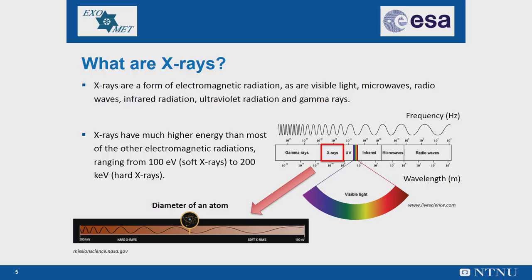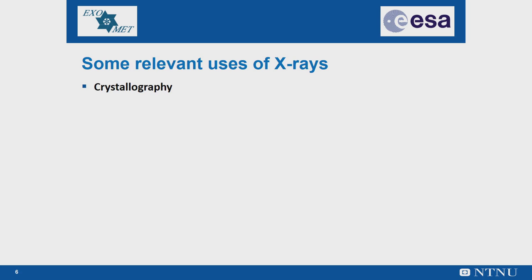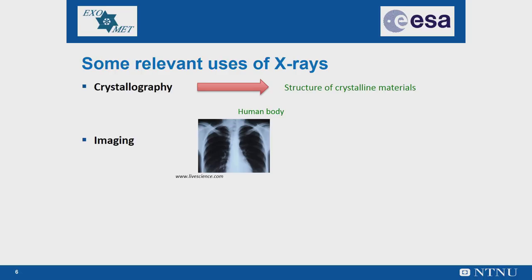Relevant uses of X-rays include crystallography. The pattern produced by the diffraction of X-rays through the lattice of atoms in a crystal is recorded and then analysed to reveal the nature of that lattice in terms of atomic arrangements, chemical bonds and various other information. X-rays have been used for medical imaging since their discovery. Bones were easily distinguishable from soft tissues on the film available at that time. Nowadays, it is possible to distinguish increasingly fine detail and subtle differences in tissue density, while using much lower exposure levels.